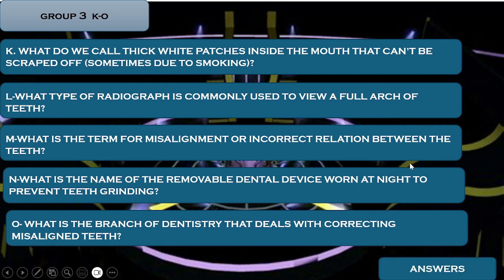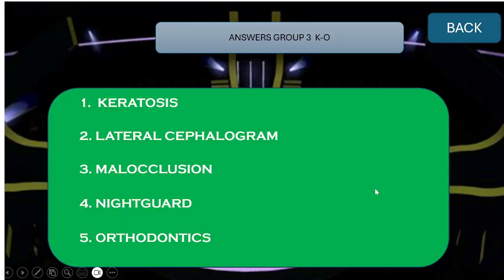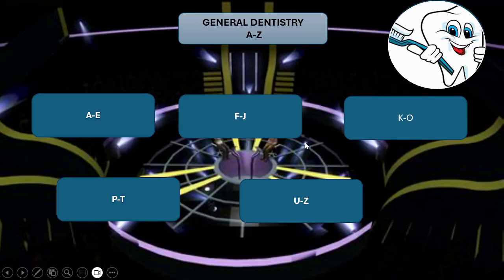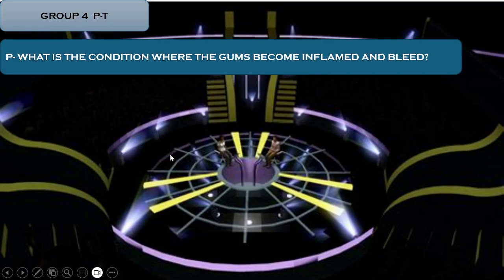And finally, what O is the branch of dentistry that deals with correcting misaligned teeth? Let's see how many questions you got right. The answers for this group were: K — Keratosis, L — Lateral Cephalogram, M — Malocclusion, N — Night Guard, and O — Orthodontics. Let's go to group four, questions from P to T.